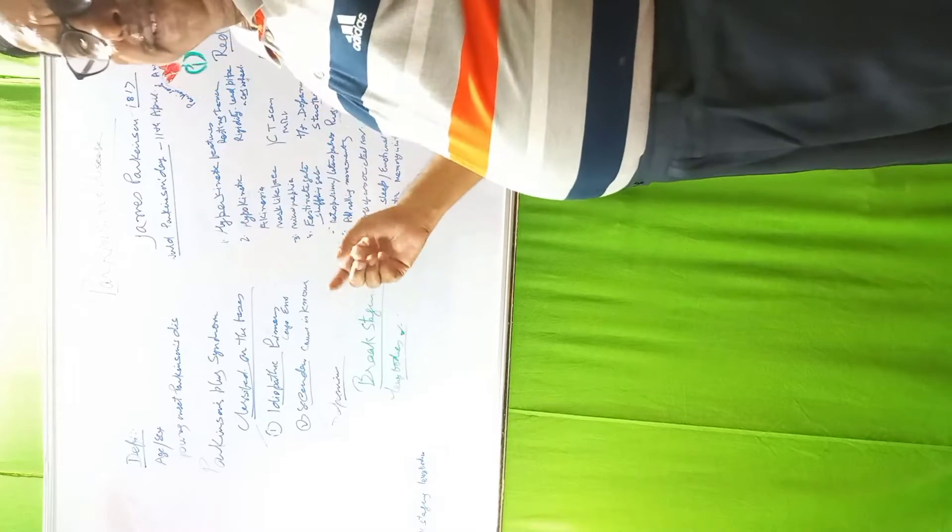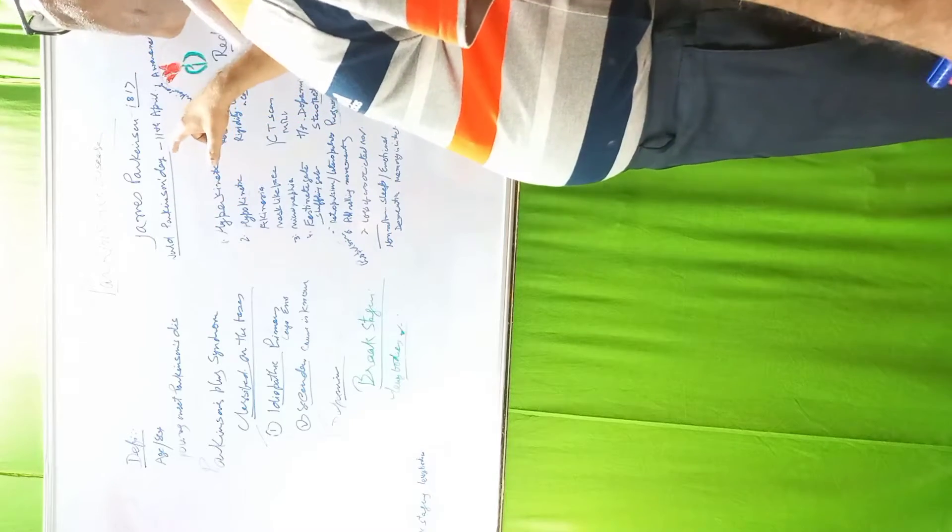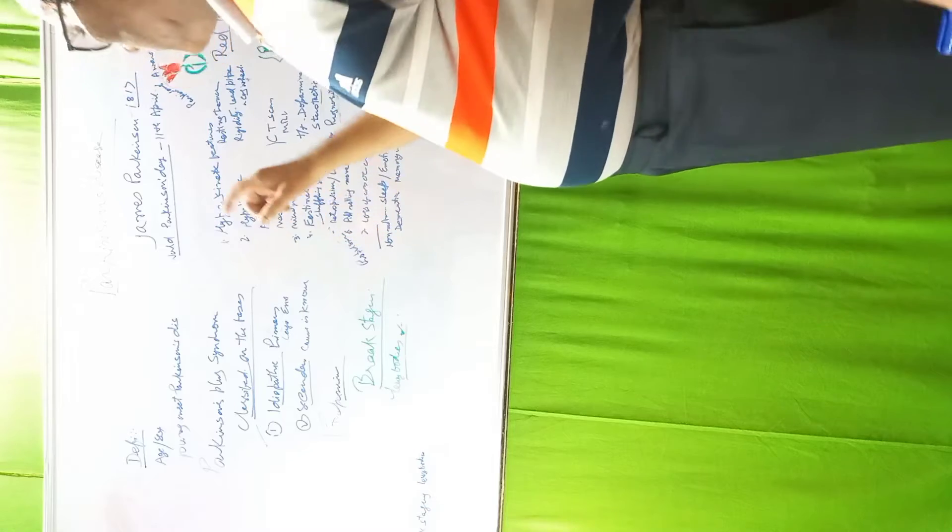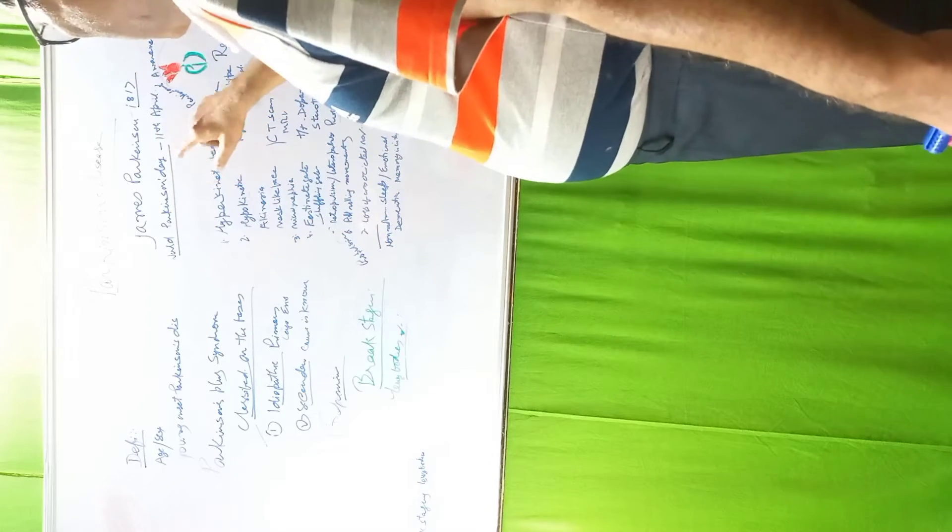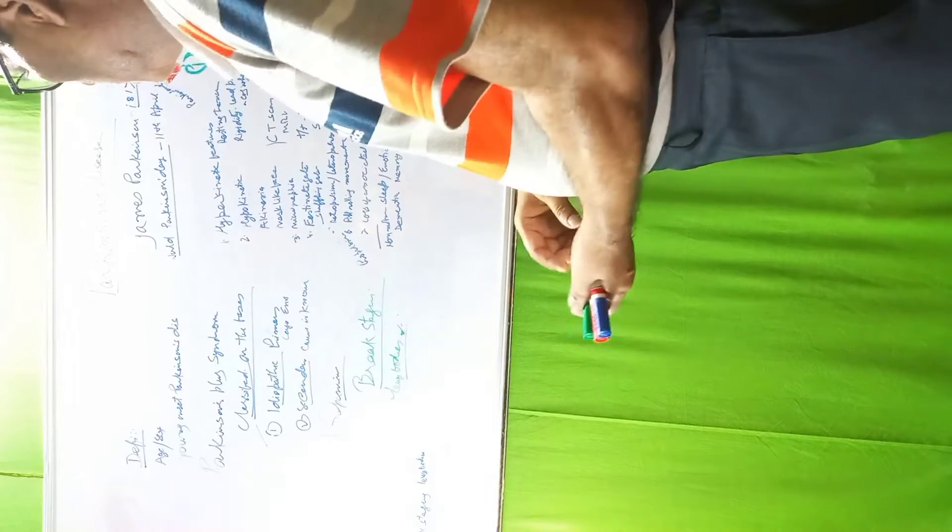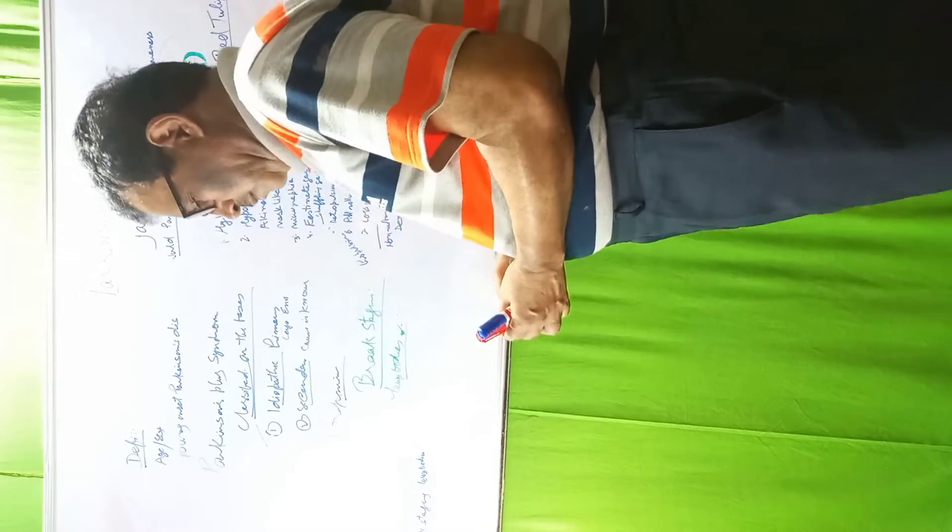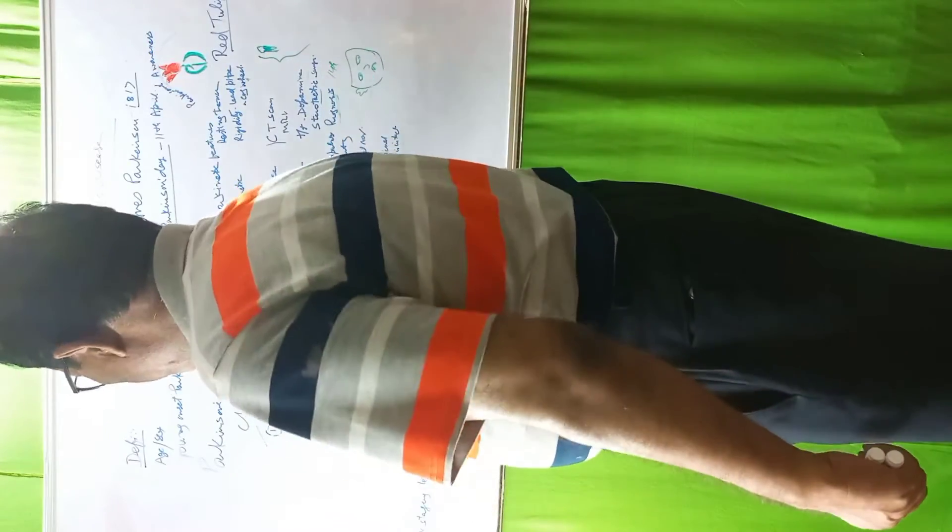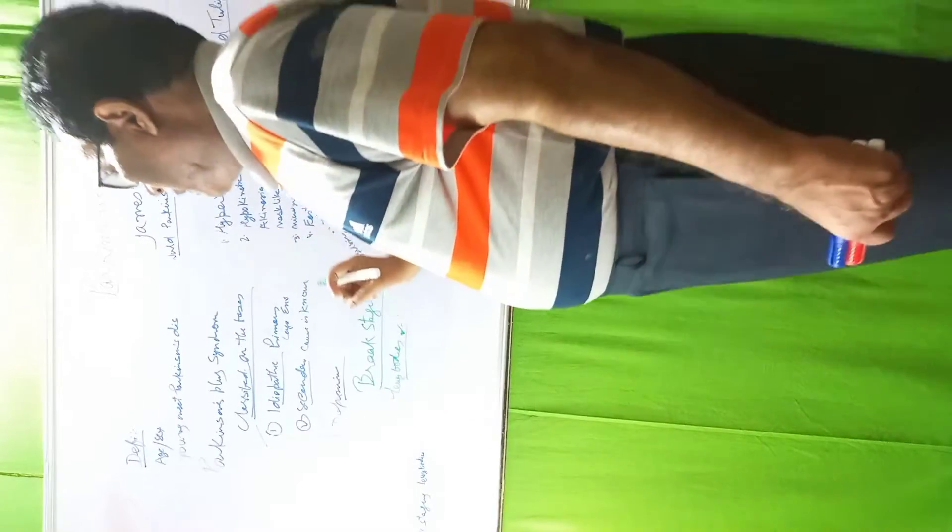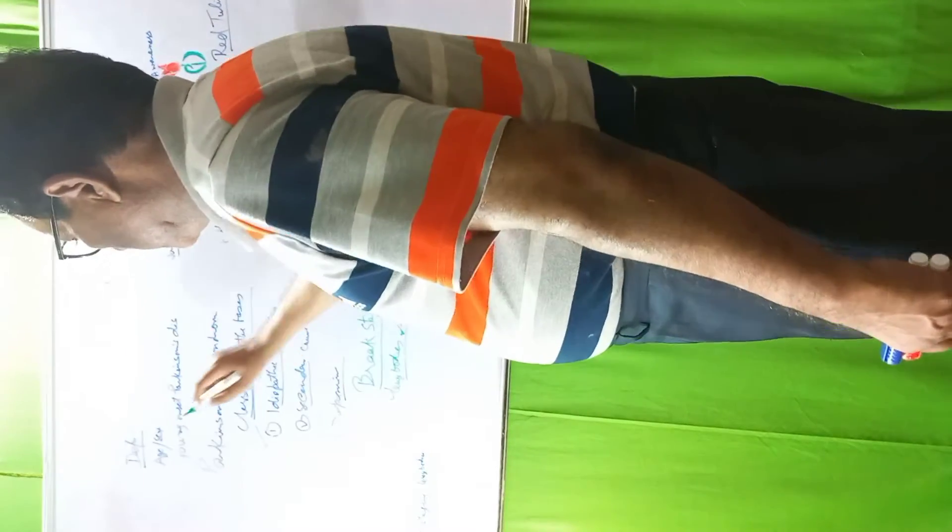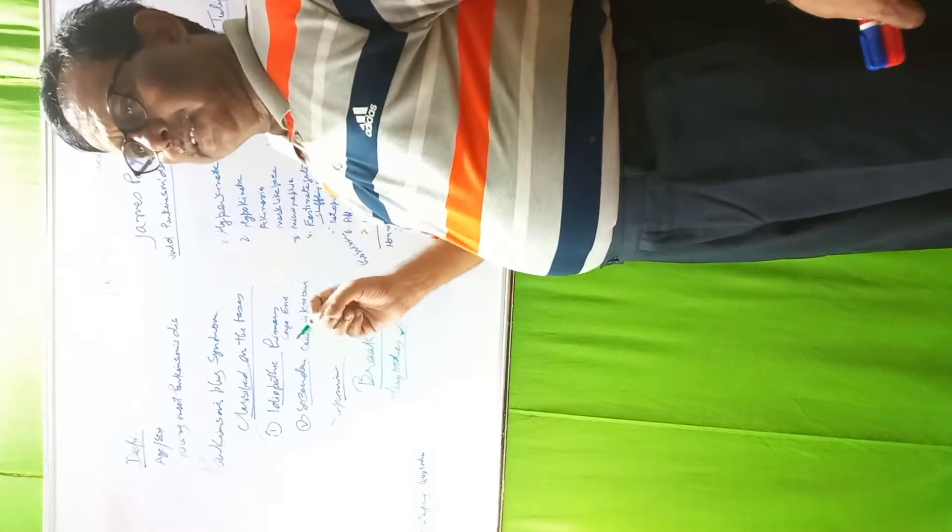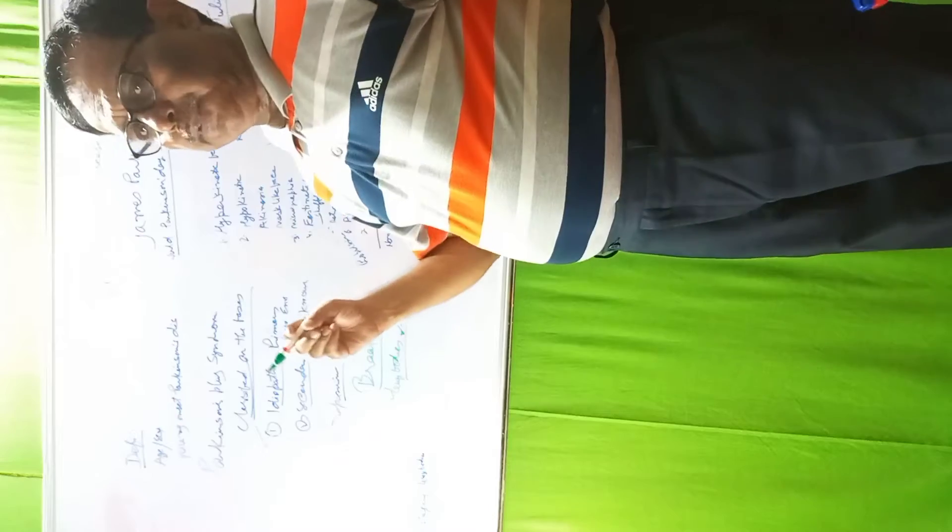He described shaking palsy and it was later named after him as Parkinson's disease. To honor him, World Parkinson's Day is observed on 11th April, his birthday. The incidence is 8 to 18 per 1 lakh of population. Age is above 60 years, that is incidence occurs in population above 60 years.